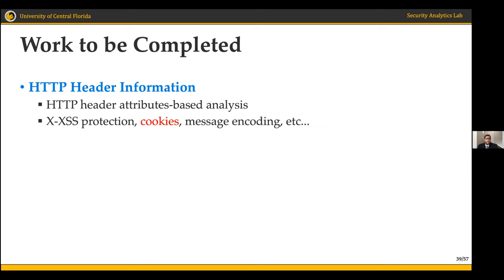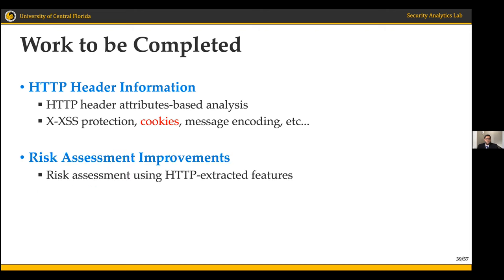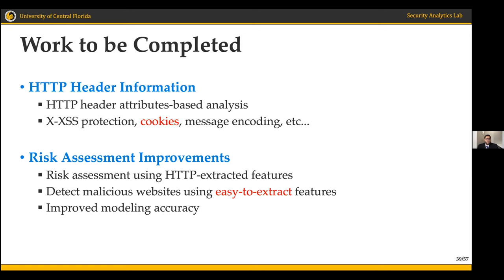To extend this work, we will analyze HTTP header features to investigate the infrastructure and behavioral differences between free and premium websites. HTTP header features can include security-related attributes such as strict transport security, set cookies, connection status codes, and server type. Including HTTP header features in our analysis will result in a more accurate risk assessment and enable detection of malicious websites using easy-to-extract features.